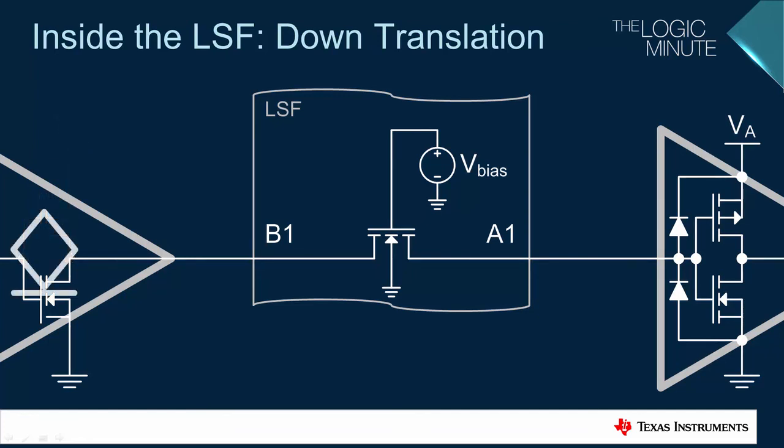For an open-drain transmitter, the pull-up resistor RB1 will have to be added back, since an open-drain output can't drive high by itself.